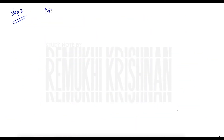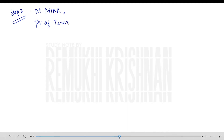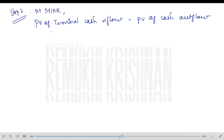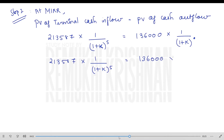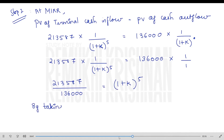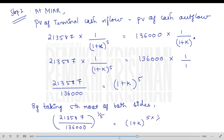To compute modified internal rate of return, write the formula: present value of terminal cash inflow equals present value of cash outflows. We already found our terminal cash inflow. Now we find its present value: Terminal Value × (1 / (1 + k)^5), where k is the modified internal rate of return we are solving for. This equals the present value of cash outflow, which is ₹1,36,000 × (1/(1+k)^0) since the investment is made in year zero. Solving each step gives us the MIRR.